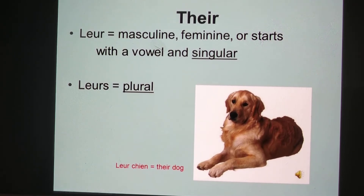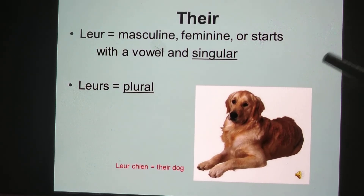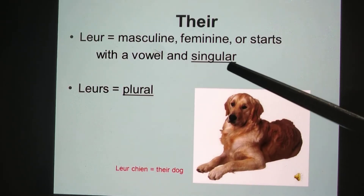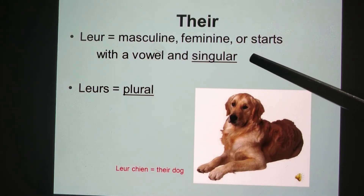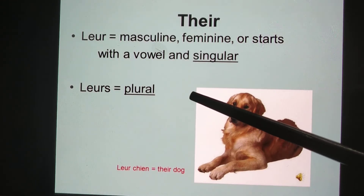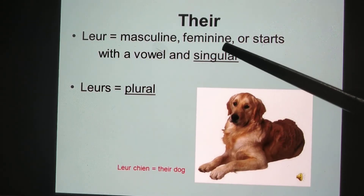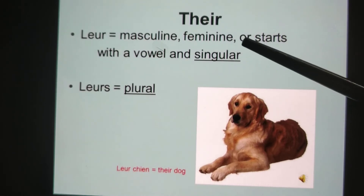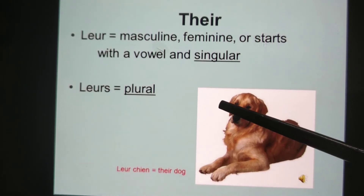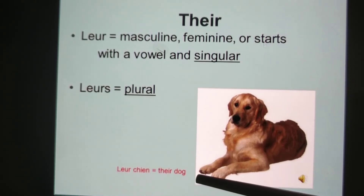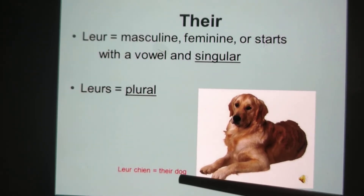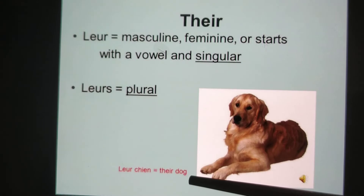For 'their,' we have leur and leurs. Leur is used for masculine, feminine, or nouns starting with a vowel in singular form. Leurs is for the plural. Examples: leur père, leur mère, leur image, leur avion. For plural: leurs parents. Example: 'leur chien' — chien is masculine singular starting with a consonant, so we use leur — meaning their dog.